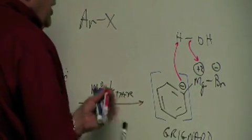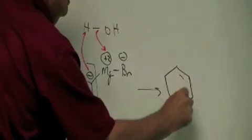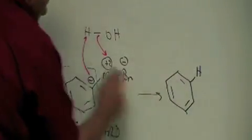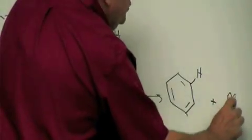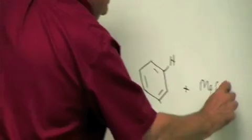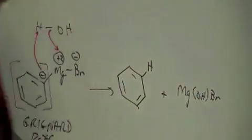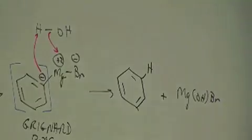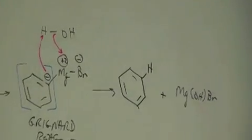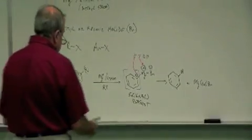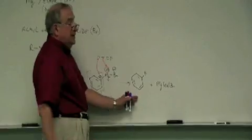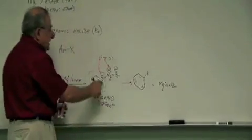And what you'd wind up getting is benzene, where this is the H that originally was on the water, plus a double salt called magnesium hydroxybromide or basic magnesium bromide. Not a good thing to happen because now you've produced something that isn't very useful anymore because it's lost its negative charge.